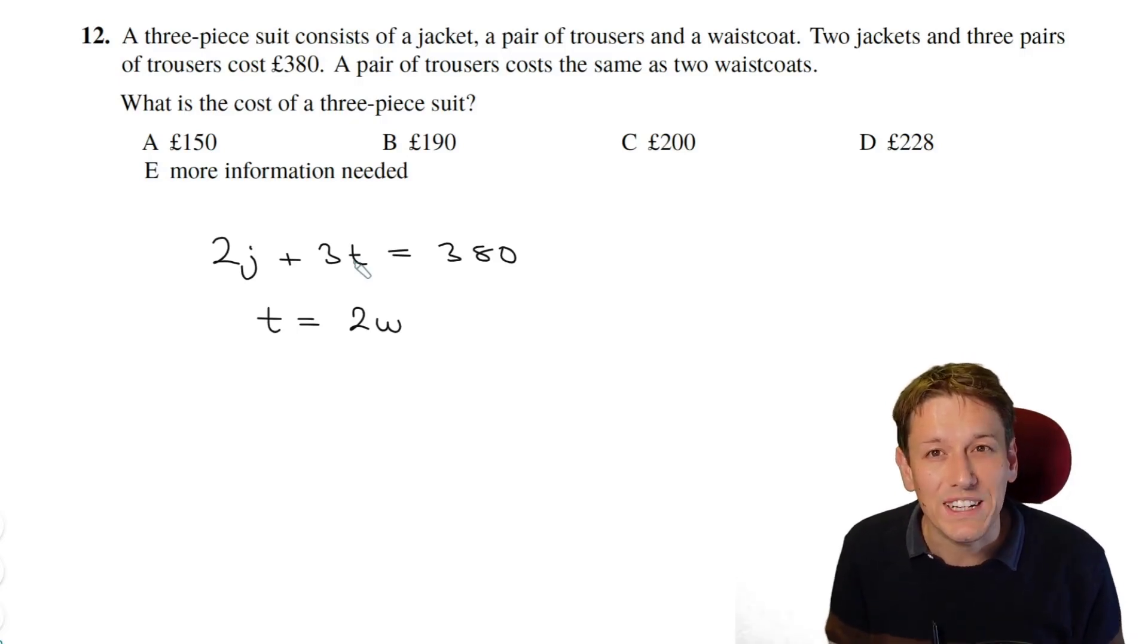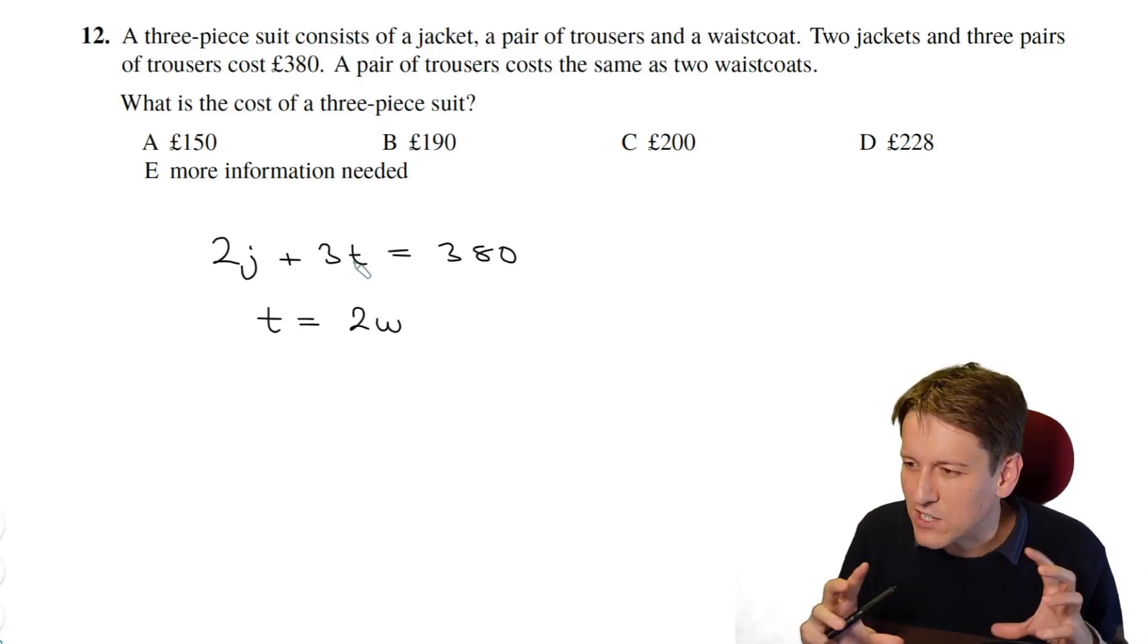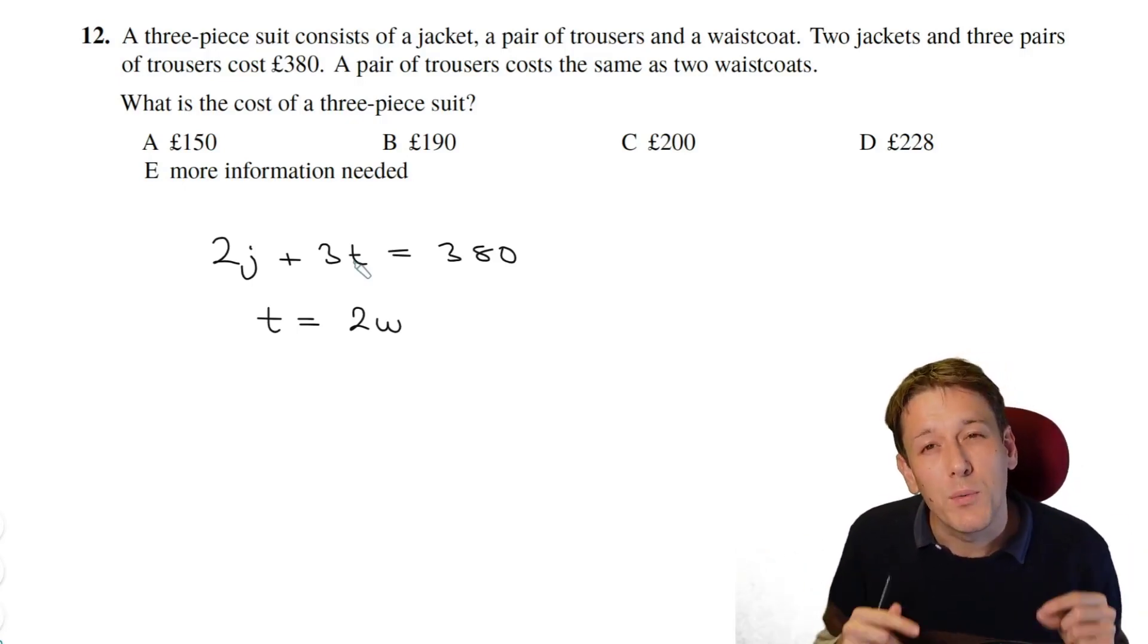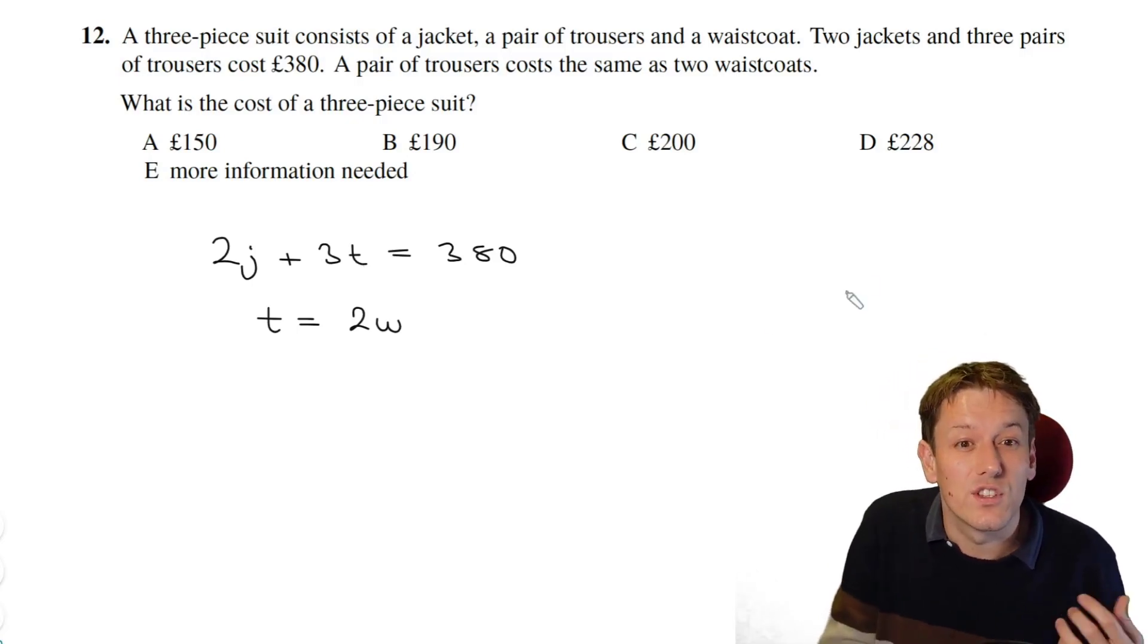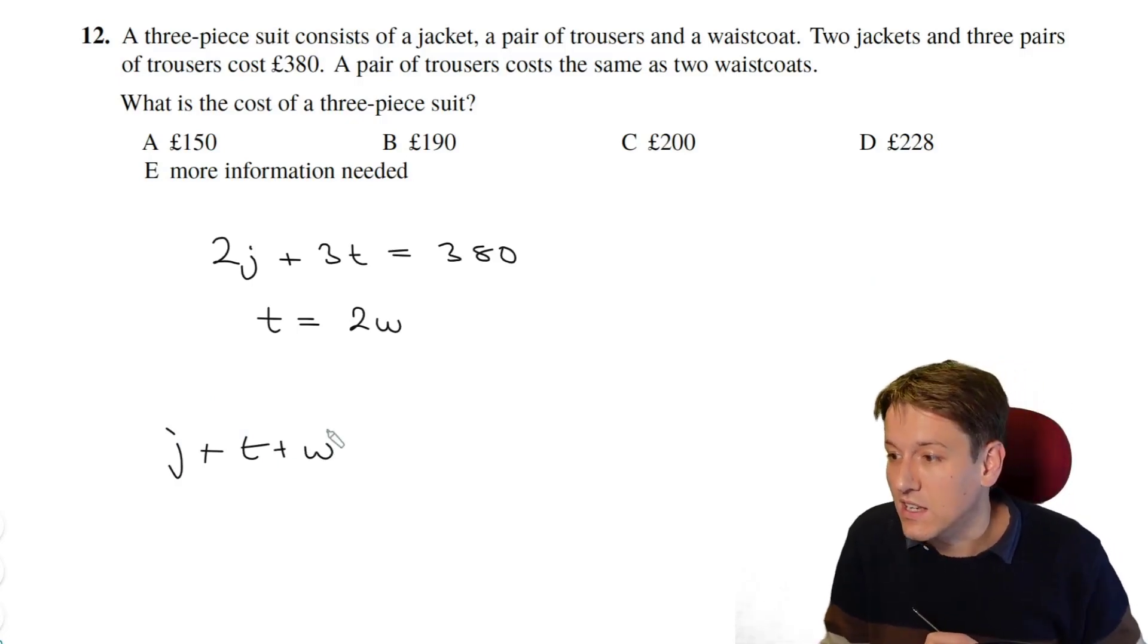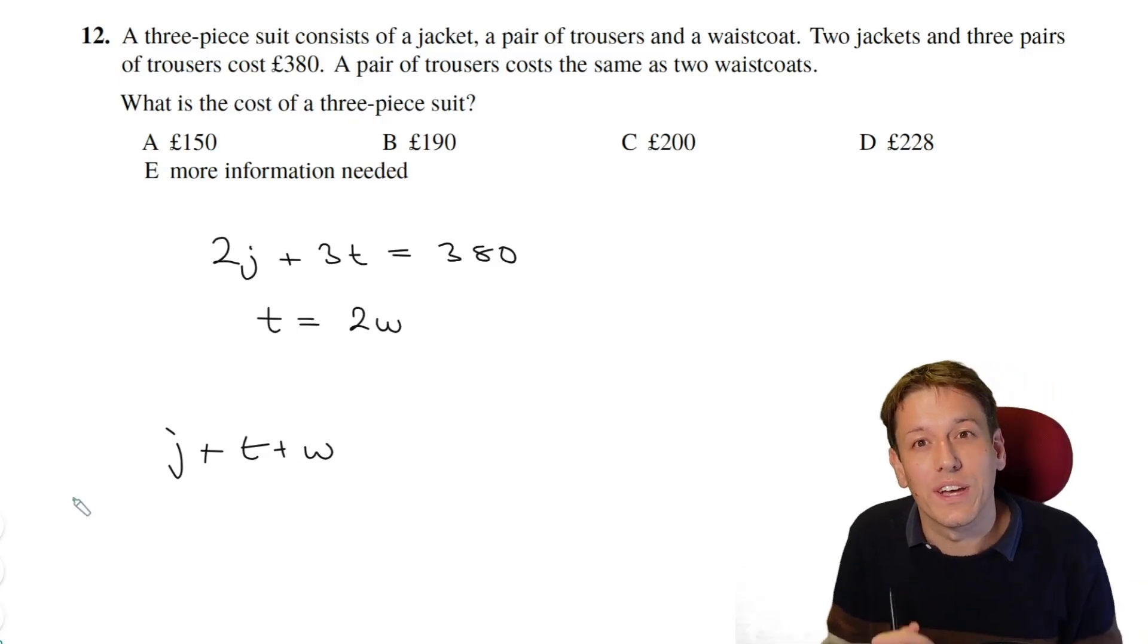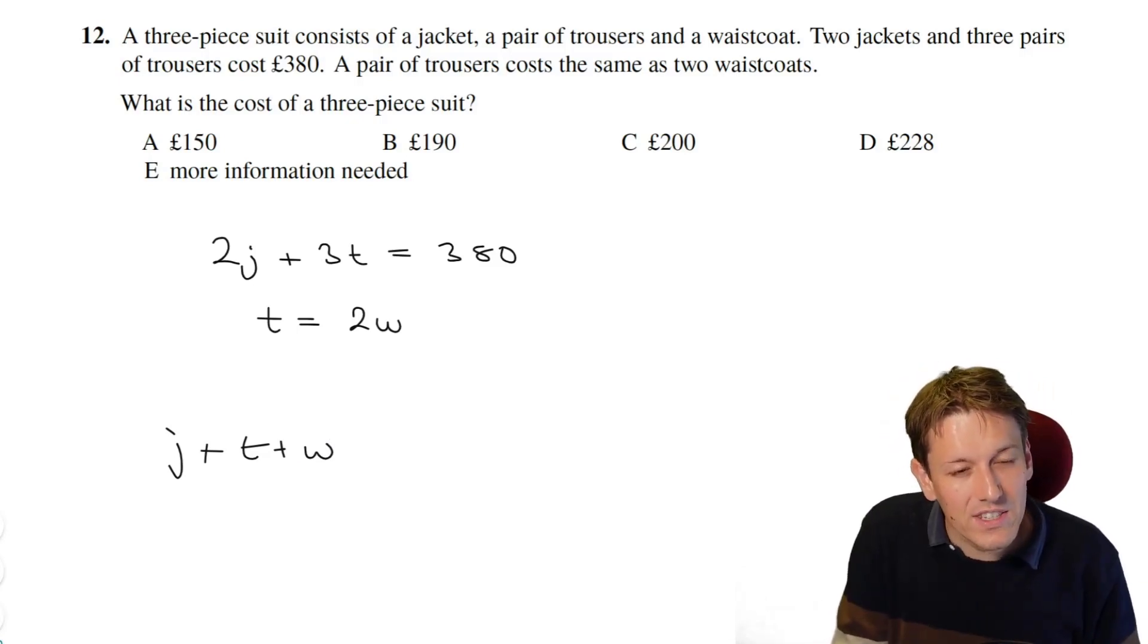Now, more information needed is very rarely the right answer in a maths challenge question. I'd forgive you for thinking it might be the right answer here, because I've got two pieces of information and three unknowns, and usually you need three pieces of information for three unknowns, but we don't actually want to work out j, t, and w here all individually. It's enough just to work out what j plus t plus w here is.